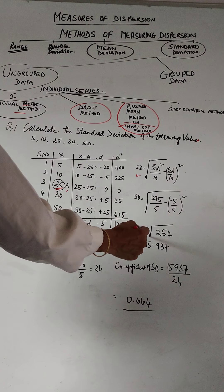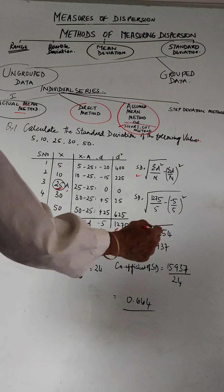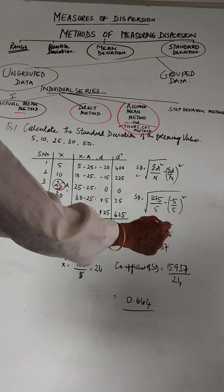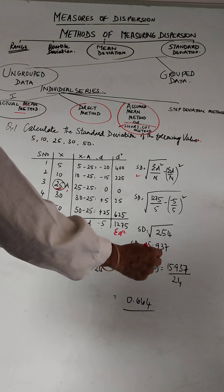Once we put the values, we work out the square root. The square root of the standard deviation is 15.937. That's how we get it. Then coefficient of standard deviation is standard deviation divided by the mean.